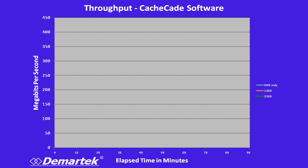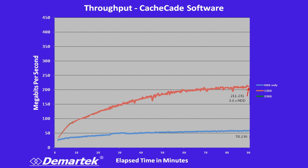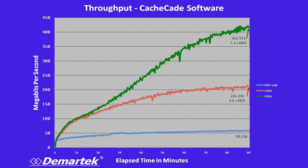Then we added a second SSD to provide additional cache and measured the results. Looking at megabits per second, you can see on the graph that at the lowest level, hard drives only averaged around 50 megabits per second throughout the 90 minutes of the test. By adding one SSD in the caching environment, we got more than 200 megabits per second. When we added the second SSD, we achieved over 400 megabits per second in the same 90 minutes.